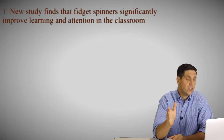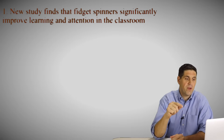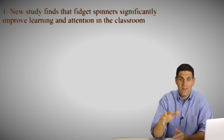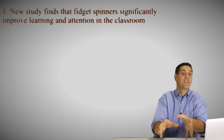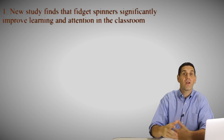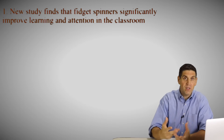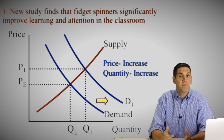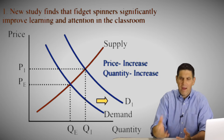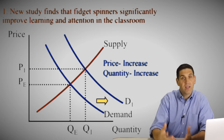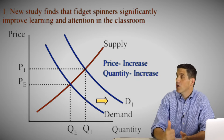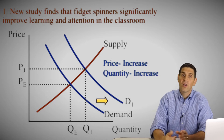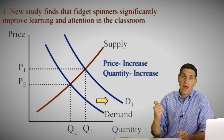Scenario one: fidget spinners significantly improve learning and attention in the classroom. Let's say they make you more intelligent and a better student. The demand would increase — people would want to buy more of these. Parents would want to buy them for their kids. So the demand curve would shift to the right, causing the price to go up and the quantity to go up. This is definitely a demand shifter — specifically taste and preferences. People prefer that their children are smarter.